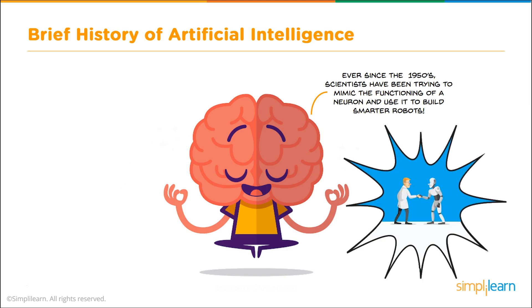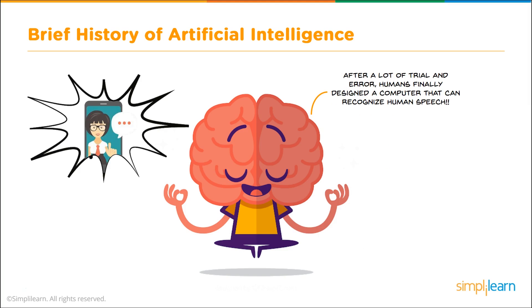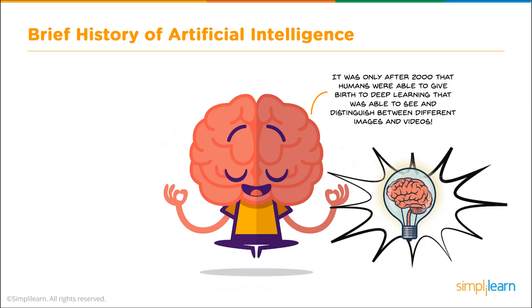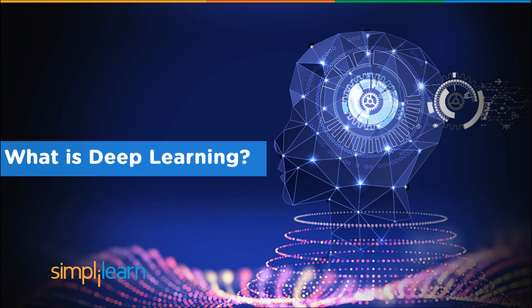Ever since the 1950s, scientists have been trying to mimic the functioning of a neuron and use it to build smarter robots. After a lot of trial and error, humans finally designed a computer that can recognize human speech. It was only after 2000 that humans were able to give birth to deep learning, which can see and distinguish between different images and videos. So let's dive into what deep learning is.